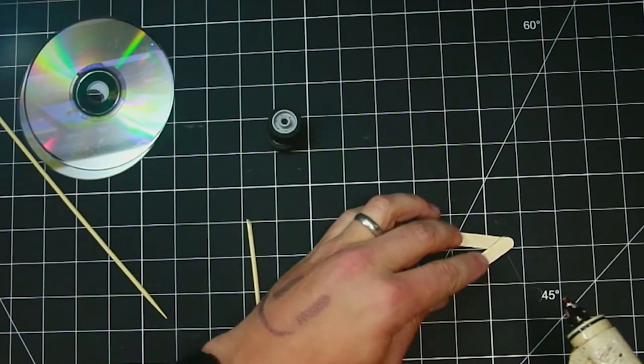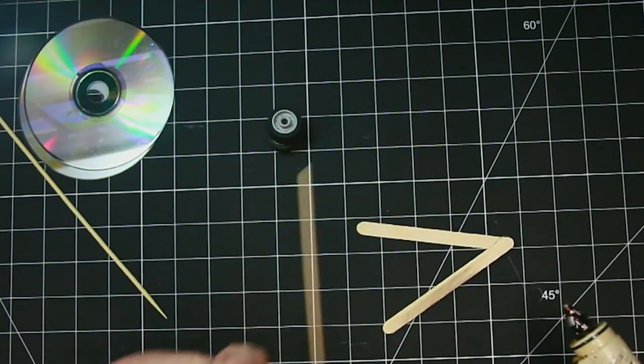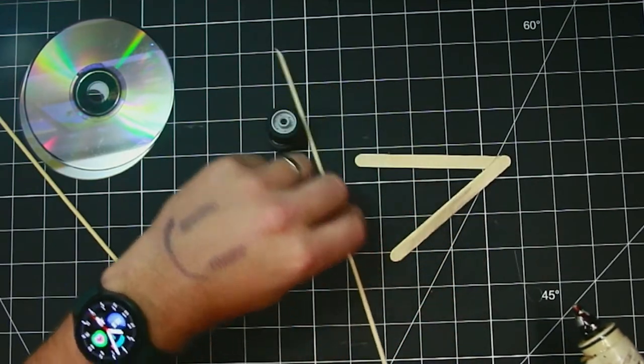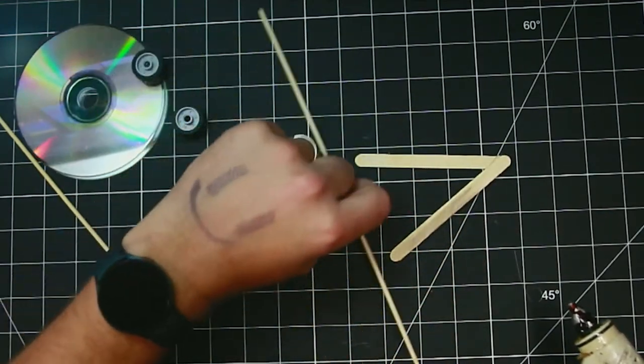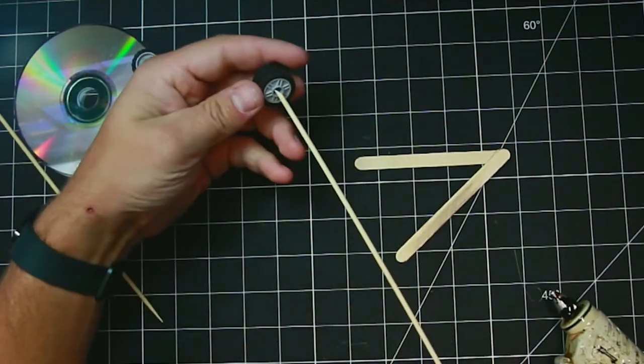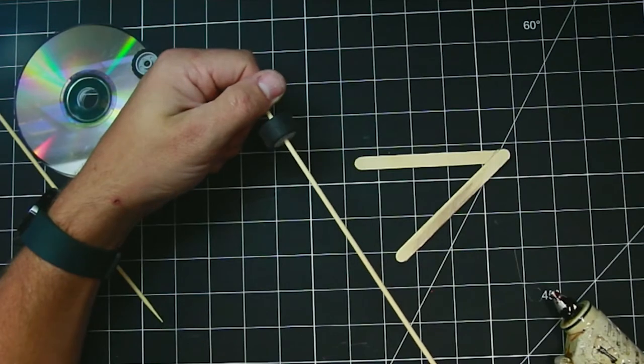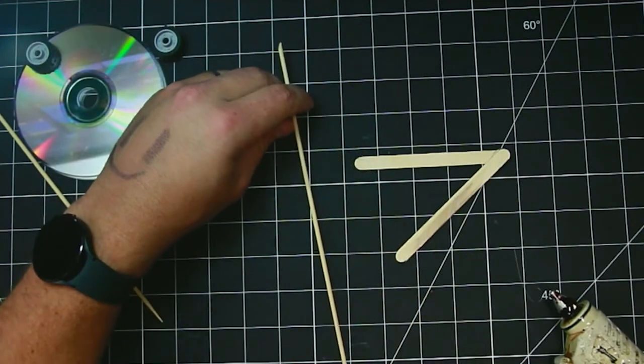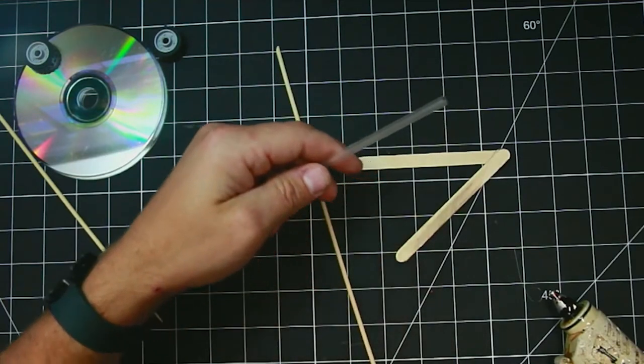Now a really common mistake is people will glue the axle directly to this set of popsicle sticks. Well that's no good. This thing has to be able to turn. So the wheel will be turning with this on it. So we have to be able to let this turn. The simple solution is simply a straw.